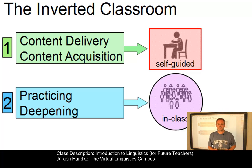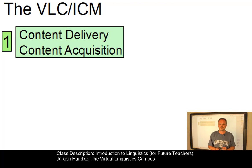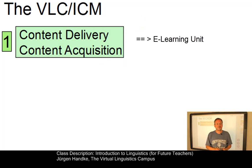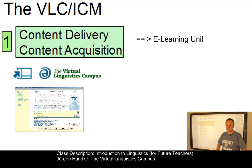Let us now look at these two phases of the inverted classroom model in detail. In phase one, you are the autonomous learner. You will be given the content by means of a so-called e-learning unit. This contains the content you have to go through prior to each in-class meeting. The content of an e-learning unit is multimodal — it involves all sorts of channels. In all our classes, we supply you with highly interactive multimedia content, the so-called virtual sessions.